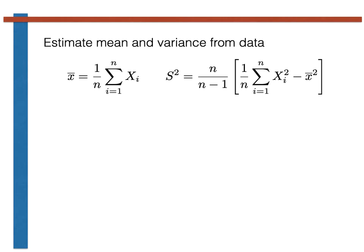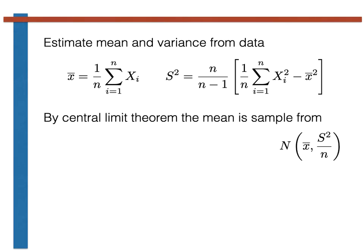We then note that by the central limit theorem, the distribution of the sample mean is a normal distribution with an expectation equal to the sample mean and a variance that is equal to the sample variance divided by n.